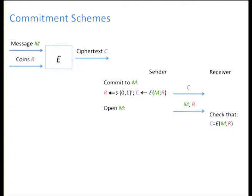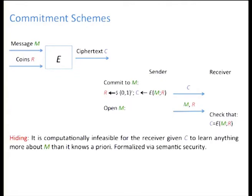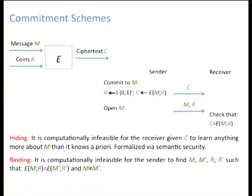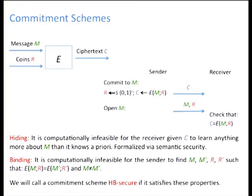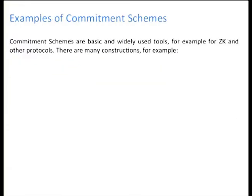The receiver then checks that the ciphertext was correctly generated. There are two standard security requirements. Hiding is a security guarantee for the sender: the receiver should not be able to learn anything about the message given the ciphertext. Binding is a security guarantee for the receiver: the sender should not be able to generate a commitment that can later be opened to two different messages. We call this notion hide-and-bind security.